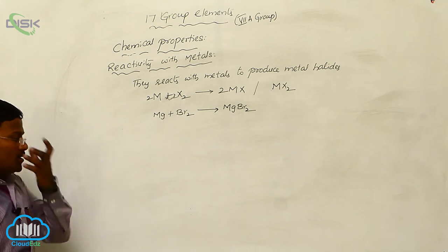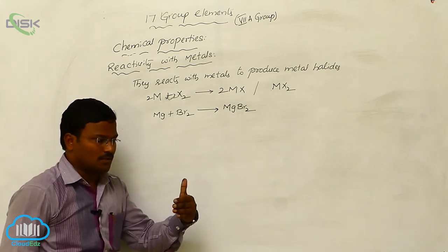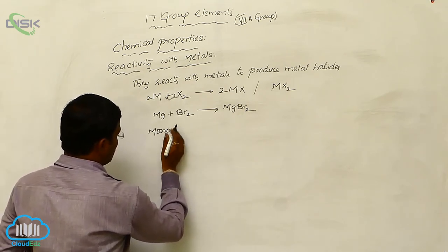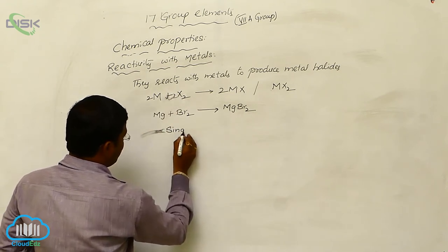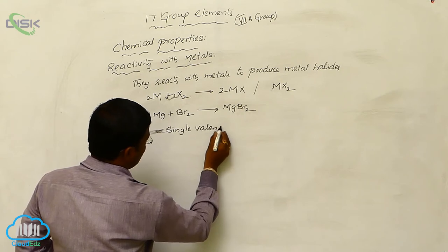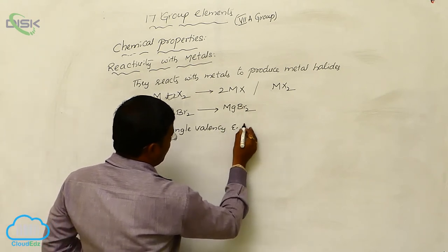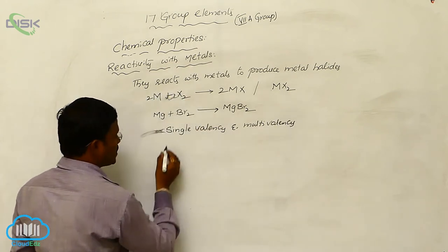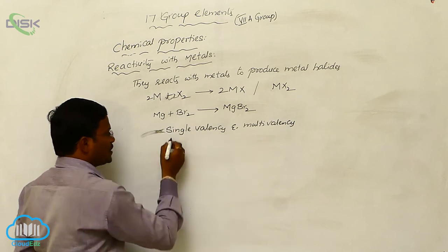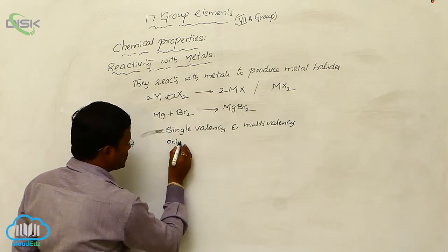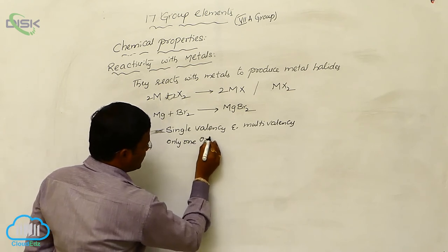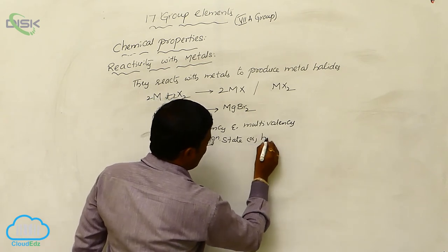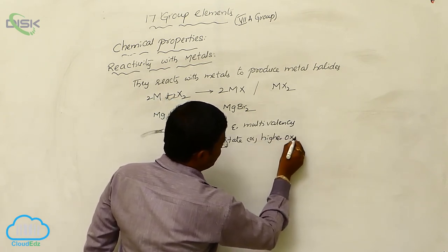The metals which react with halogens may be monovalent, with single valency, or multivalent. This means the metals may have only one oxidation state or higher oxidation states.